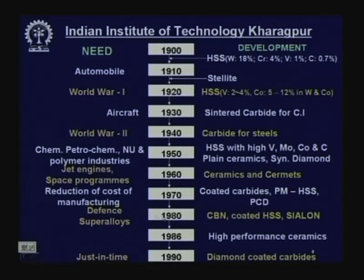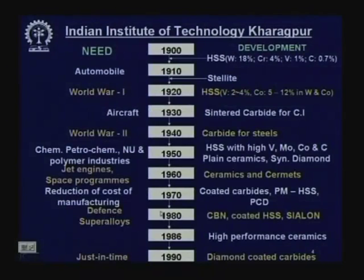In 1980, defense and superalloys like titanium alloy and nickel-base alloys — which are very difficult to machine by conventional cutting tool materials — demanded special advanced cutting tool materials such as cubic boron nitride, coated high speed steel, and Sialon. These advanced cutting tool materials came into being in 1980.